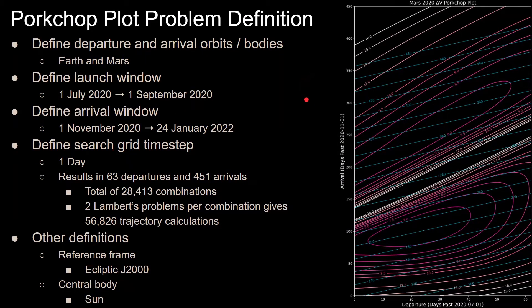Now we get to how to actually define the pork chop problem. First, you have to define your departure and arrival orbits, which correspond to bodies. In this case, we are departing from Earth, so we need to know the orbit of Earth, and we are arriving at Mars, so we need to know the orbit of Mars.